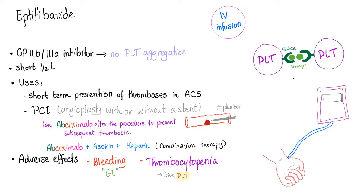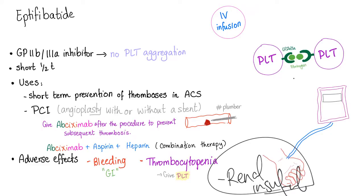Eptifibatide — the 'Epiphanic-tide.' It's a GP2B3A inhibitor; therefore, no platelet aggregation; therefore, no blood coagulation. Short half-life. Used for short-term prevention of thrombosis in ACS and percutaneous coronary intervention. Side effects include bleeding — the most common type being GI bleeding — as well as thrombocytopenia and renal insufficiency. If a patient has renal insufficiency and you need a GP2B3A inhibitor, don't give eptifibatide; give abciximab instead. Eptifibatide's effects are reversible: stop the infusion and use dialysis.